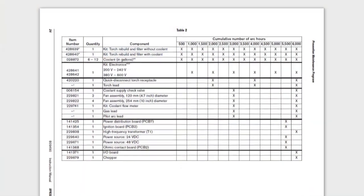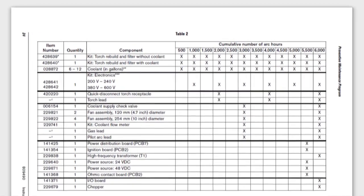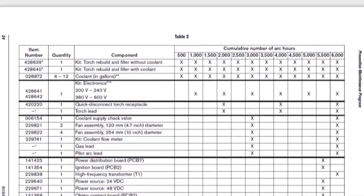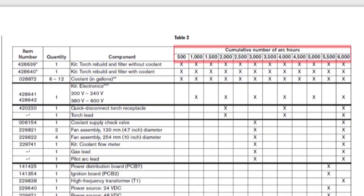For information on component replacement intervals, refer to the component replacement schedule found in the preventative maintenance instruction manual. This chart will provide the replacement intervals and arc hours of the power supply and may be viewed on the web interface tool for the XPR or CNC.